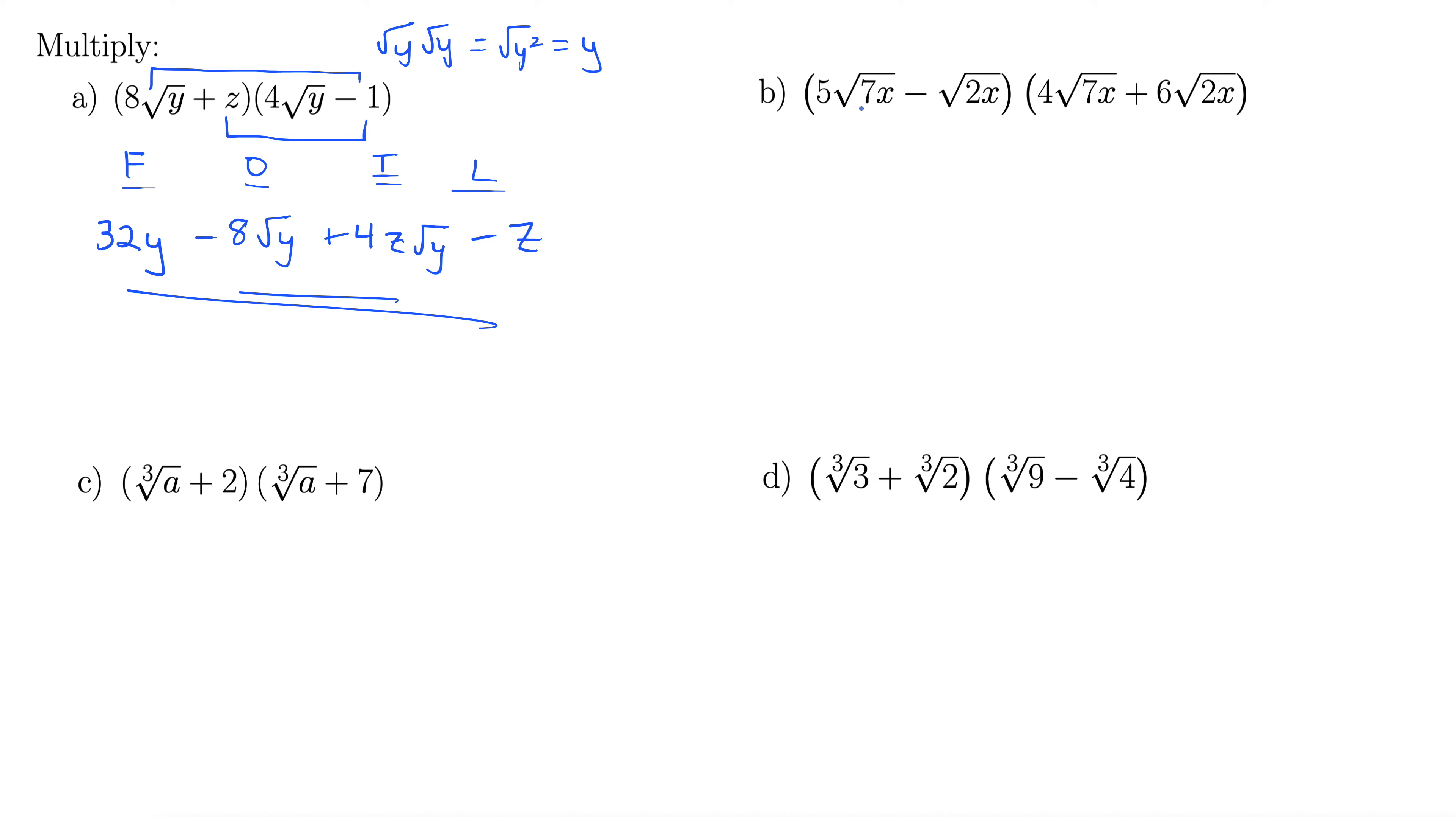Let's look at b. Here we have 5 rad 7x minus rad 2x, all of that quantity times the quantity 4 rad 7x plus 6 rad 2x. Again with the FOIL. FOIL is the tried and true. Anytime you have one binomial times another, FOIL is pretty much the way to go. So first, 5 times 4 is 20, and rad 7x times rad 7x is indeed 7x.